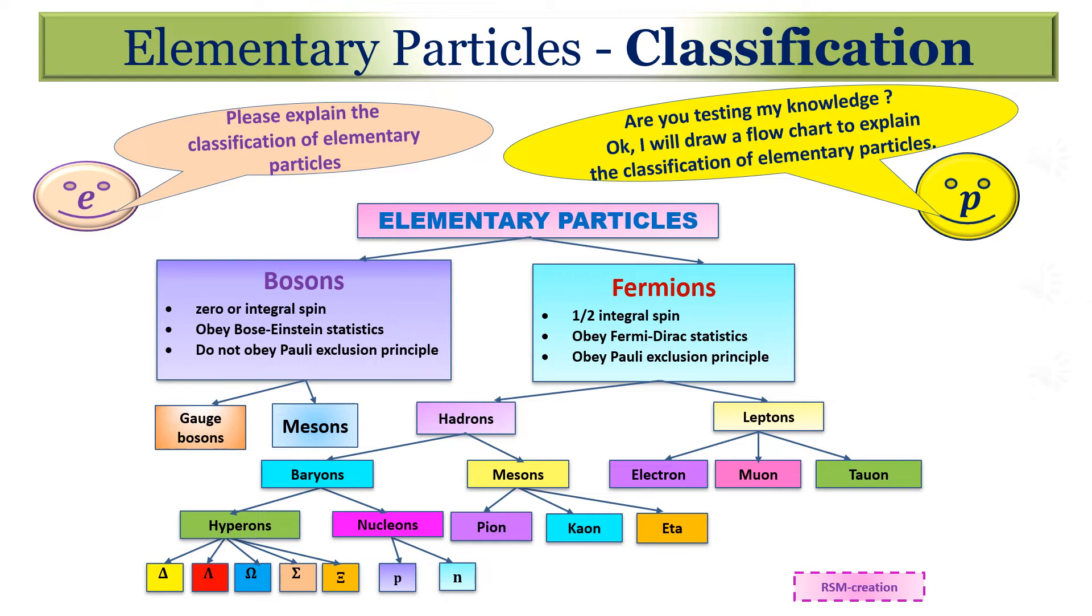Hadrons are further classified into baryons and mesons based on their masses. Hadrons having masses equal or greater than the nucleon mass are called baryons and hadrons having mass below nucleon mass are called mesons. Baryons are further classified into hyperons and nucleons. Baryons with mass greater than nucleon mass are called hyperons. Examples are lambda, omega and delta. Proton and neutron are together called nucleons. Nucleons are made up of elementary particles called quarks. Quarks and leptons are the building blocks of all matter.